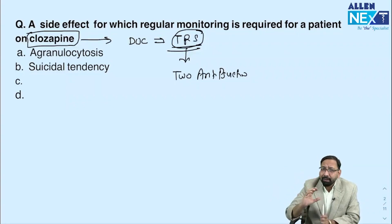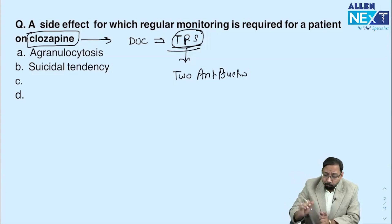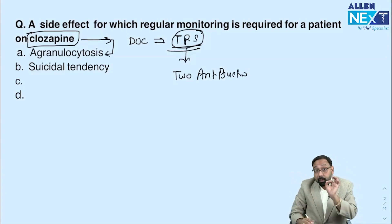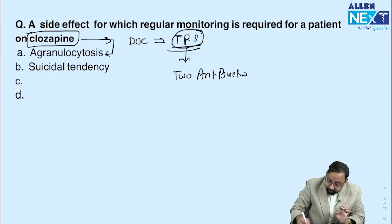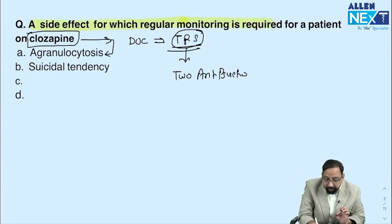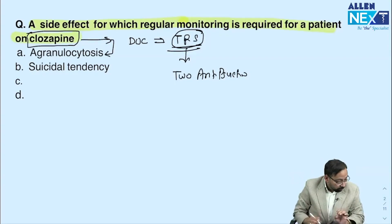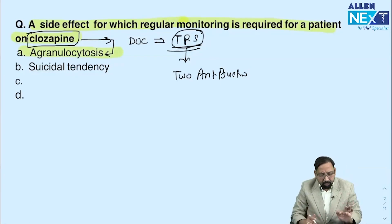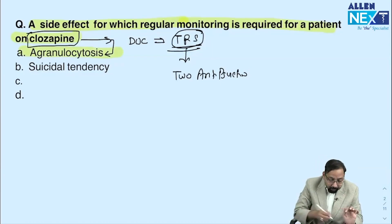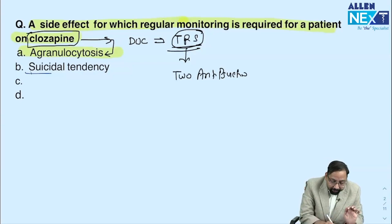We keep clozapine as a last resort because it has many serious side effects. One of them is agranulocytosis, which requires regular monitoring. A question was asked: for which side effect is regular monitoring required in a patient on clozapine? The answer is agranulocytosis. Note that clozapine also has anti-suicidal properties, so suicidal tendency is not a concern — it is actually reduced.